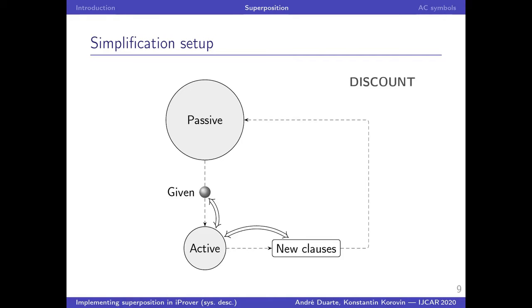For example, a useful lemma may sit for a very long time in passive, not being used, when in fact a simple demodulation or something could unlock the proof in a fraction of a second. But it ends up not happening because those simplifications are not performed. So you can sort of see the balance that's involved here and how it's very non-obvious what's the best strategy to choose.